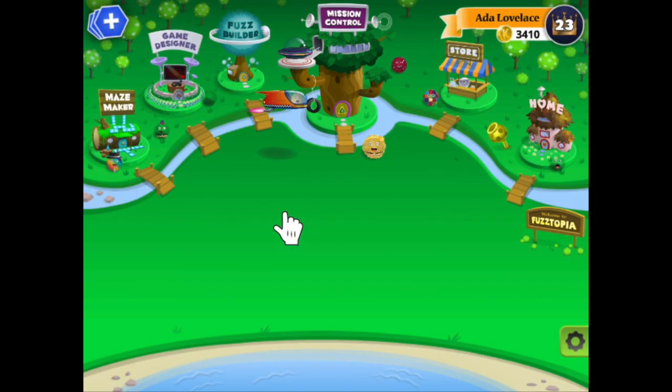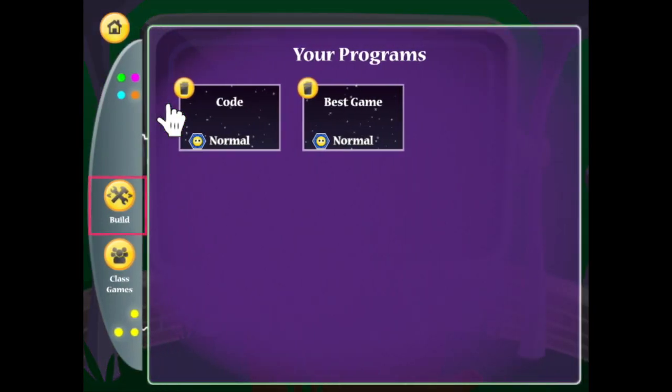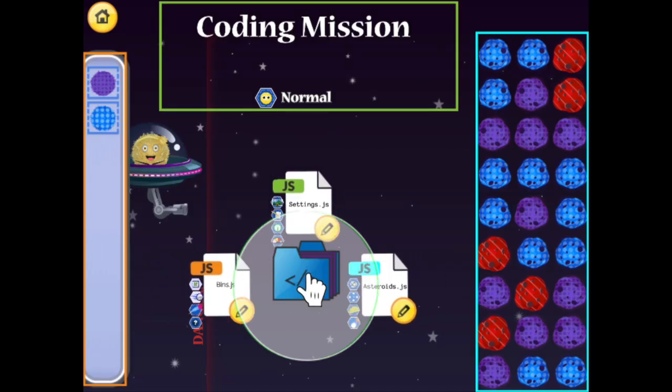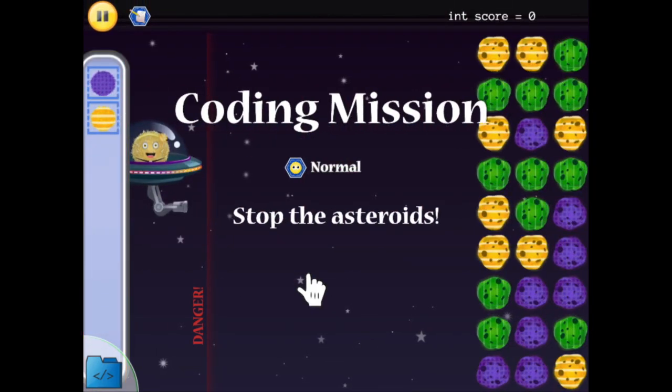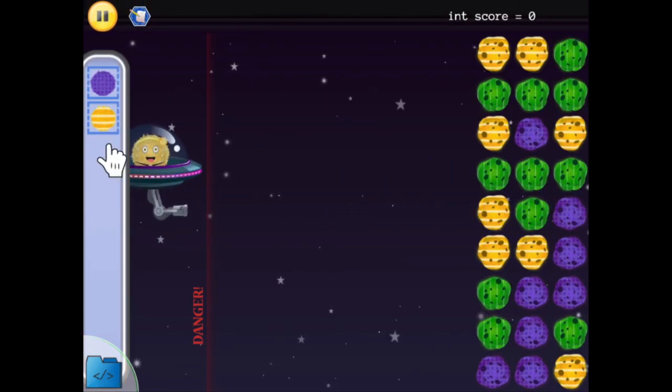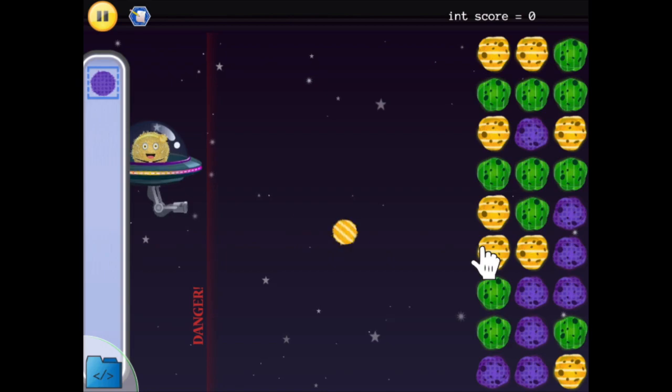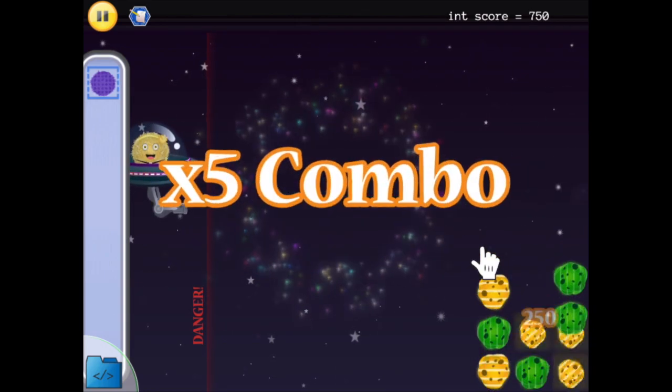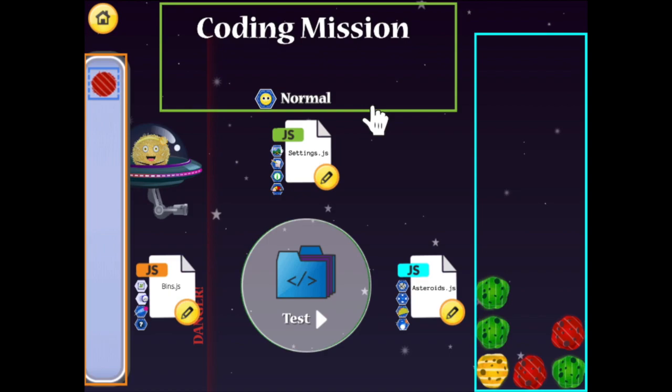Let's take a look at this process in Codable's game designer. We've already taken care of step one and come up with the idea for this game. The goal is to clear the colored asteroids with the fuzz balls. Today you will help with the rest of the steps. Here's what you'll do.